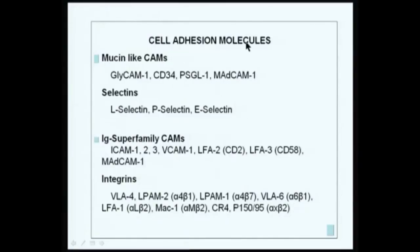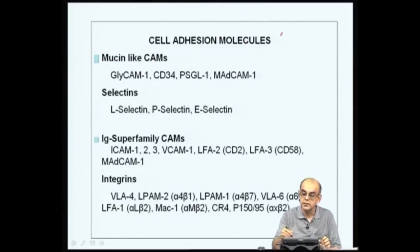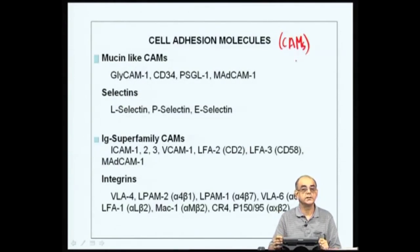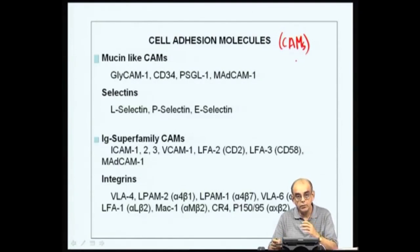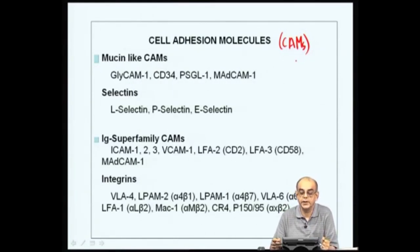How does this homing or lymphoid trafficking occur? As mentioned, this happens mainly because of cell-cell interaction via molecules called cell adhesion molecules, or CAMs for short. These cell adhesion molecules play a major role in lymphoid trafficking through the lymph node, out of the lymph node, into the heart, as well as other locations.